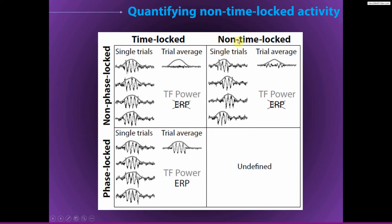Then there is the issue of non-time-locked activity. Time-frequency power via complex Morlet wavelet convolution is going to be okay at extracting these signal characteristics as long as it is not really extremely non-time-locked. In this example the dynamics are non-time-locked to the activity, but there is a lot of overlap across trials, so there's still a pretty decent representation in the time-frequency power. But the more non-time-locked these dynamics are relative to stimulus onset, the harder it's going to be to quantify these characteristics, particularly at the trial-average level.